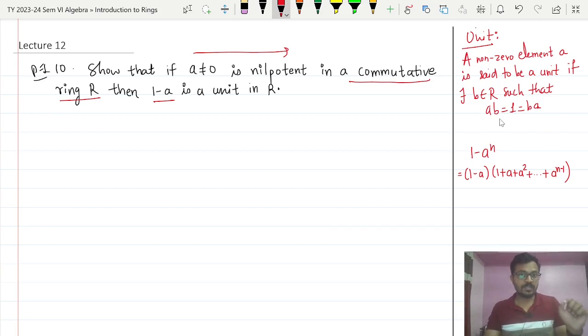But remember, whenever the ring is commutative it is enough to show that ab equals 1 or ba equals 1, because if the ring is commutative, ultimately ab and ba will be one and the same. This you have to remember.